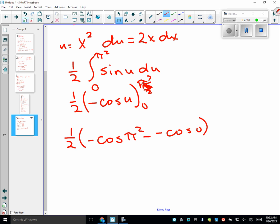So I have one half negative cosine of pi squared minus negative cosine of 0. Is that right? What is cosine of 0? It is 1. So minus plus 1, so what's the pi squared? So if I couldn't use a calculator, my answer would be negative cosine pi squared plus 1.